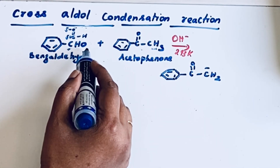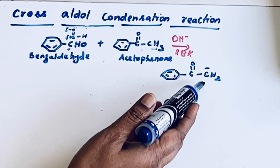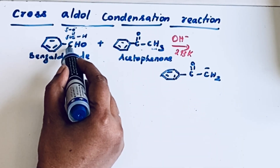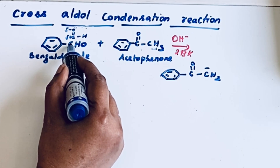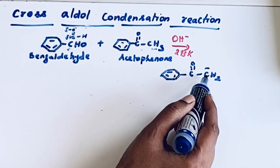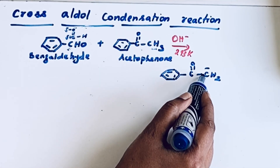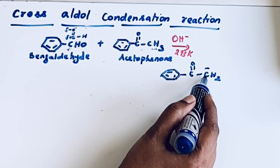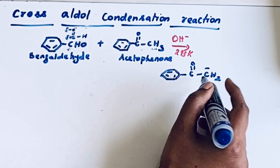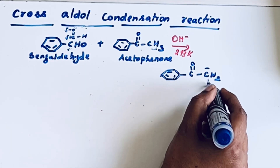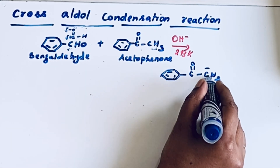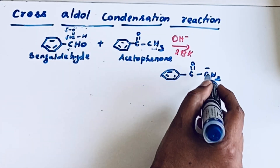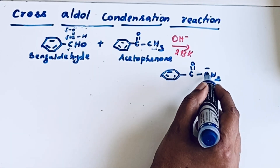A nucleophile always attacks the electrophile. So this nucleophilic carbon attacks the electrophilic carbon of benzaldehyde. Because of that, there is the formation of a C-C bond. This step is very important — nucleophile attacks electrophile.